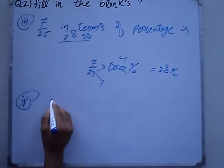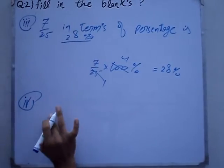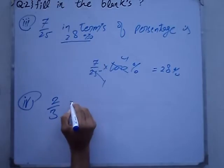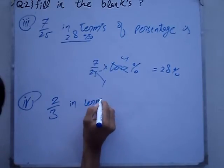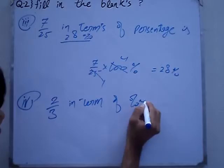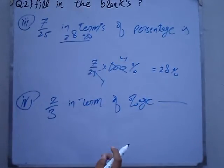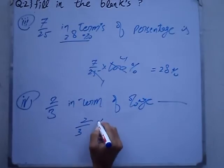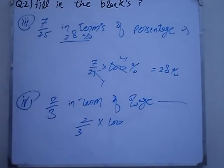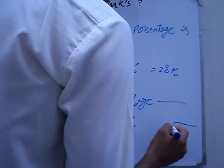Using the formula, 2 over 3 in terms of percentage: 2 over 3 into 100. That's 2 times 100 over 3, which equals 200 over 3.